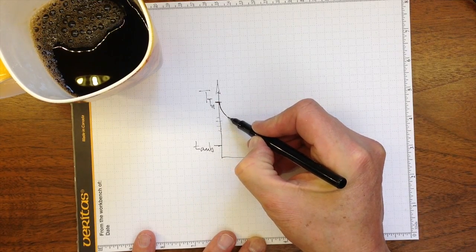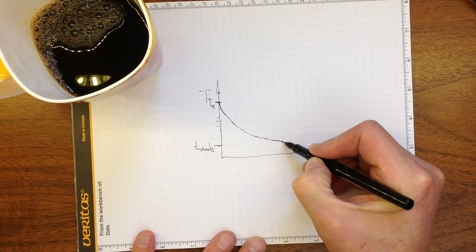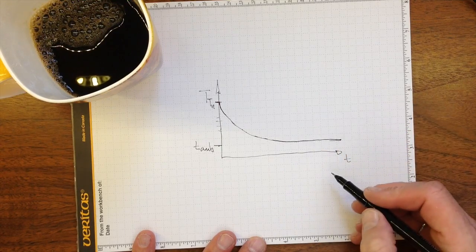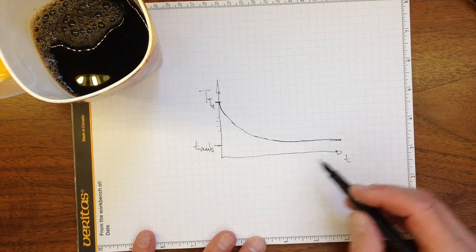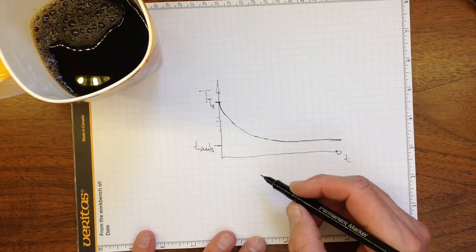And then as it gets closer, it drops down more slowly until eventually it comes down to the same temperature as the air in the room. So this is a first order response. It follows a first order differential equation.